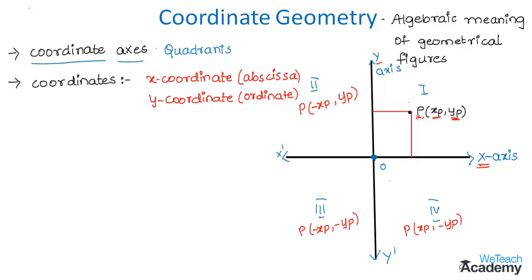Every order pair of real numbers represents a unique point in the plane. If the y-coordinate yp equals 0, then point P lies on the x-axis. If the x-coordinate xp is 0, then the point lies on the y-axis. Thus the coordinates of the origin O are (0, 0), as it belongs to both axes.